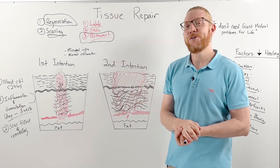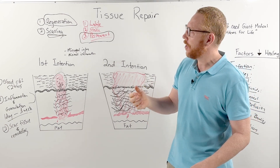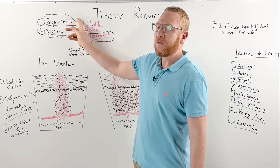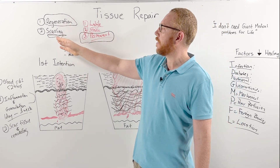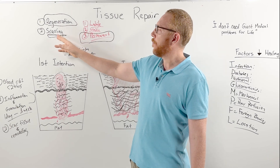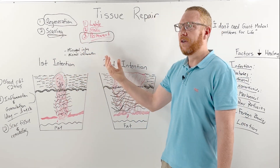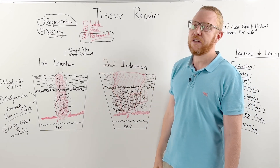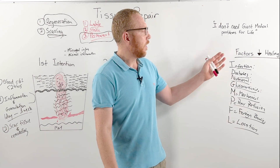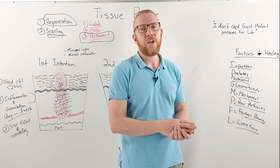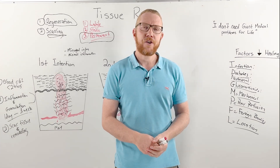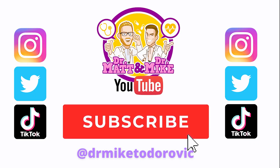So there we have it — we've covered everything you need to know in tissue repair. When tissue is injured it takes two pathways: hopefully regeneration, but if the injury is extensive or the tissue type is permanent, scarring is more likely. For skin, we have first or second intention wound healing depending on the extent of injury and inflammation. As clinicians, we need to ensure that the factors that slow down wound healing are being identified and addressed.